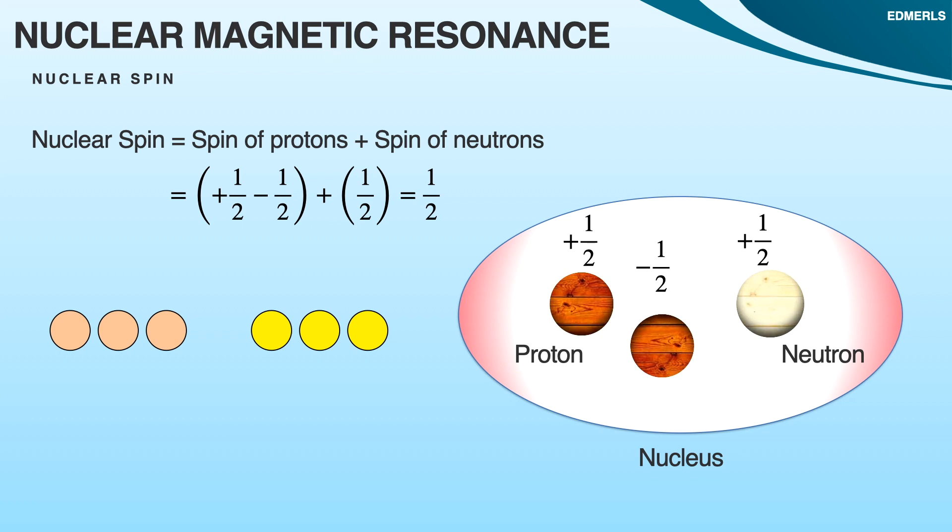You can imagine this as the pairing of opposite spins. As proton can pair with proton only, it can cancel the spin of proton, and neutron can pair with neutrons only. Therefore, it can cancel the spin of neutron only.